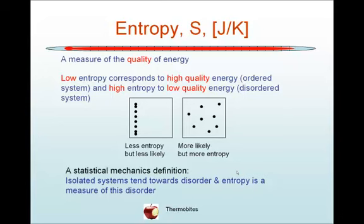A high entropy system corresponds to low quality energy. In other words, it's a disordered system. In the box on the right hand side, you can see the molecules are distributed uniformly throughout the box. The key thing about this is that high quality energy, or low entropy, is statistically typically unlikely. So the system on the left has less entropy but is less statistically likely, and the system on the right is more likely and has more entropy.